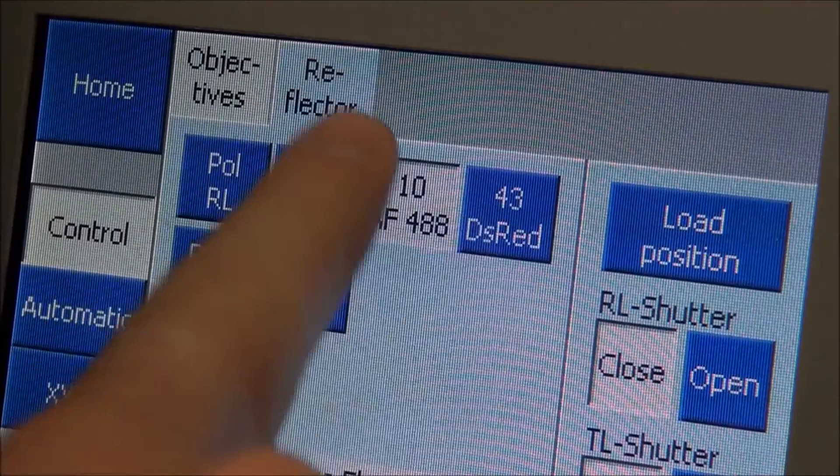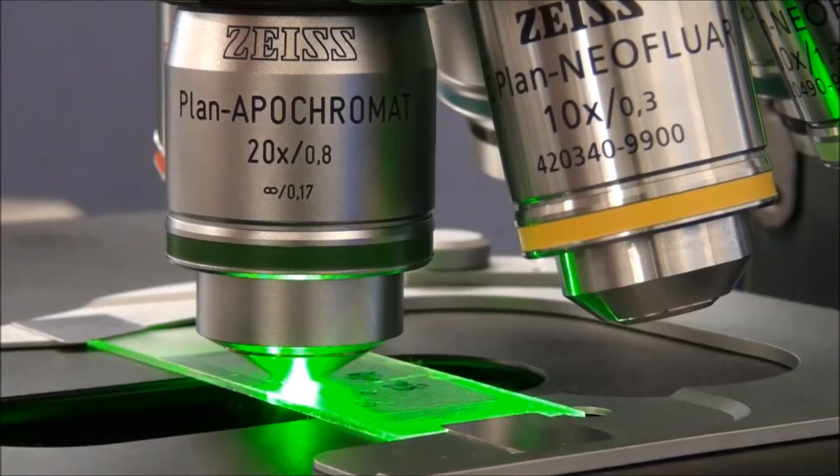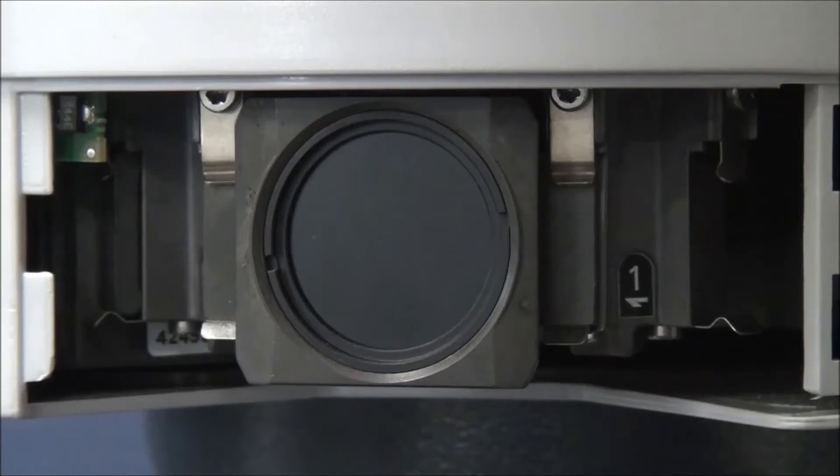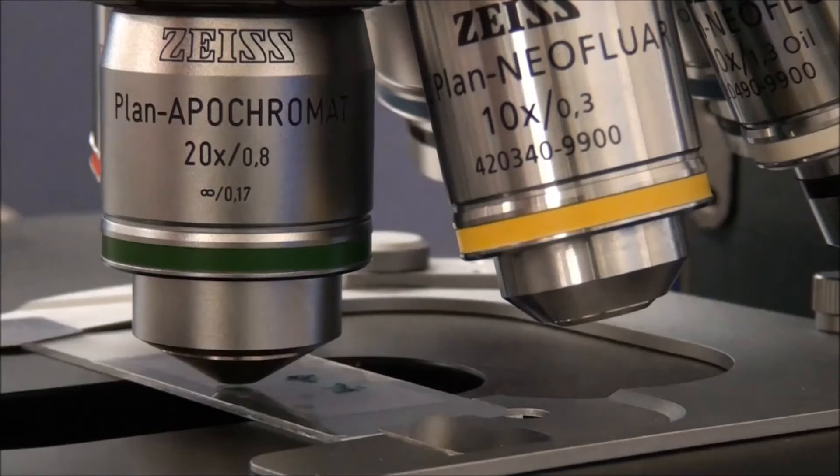Some microscopy techniques require a way to reflect light to a sample or manipulate that light before it reaches your eyes or a camera. For that reason, push and click reflector modules, otherwise known as filter cubes, are installed in the microscope.